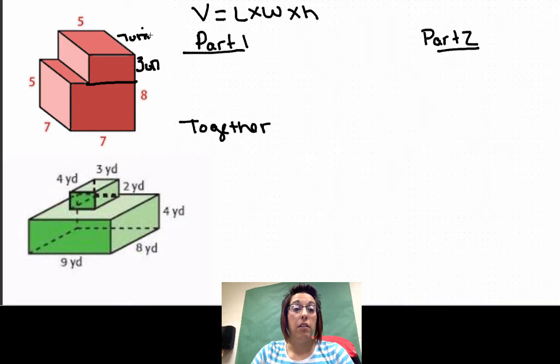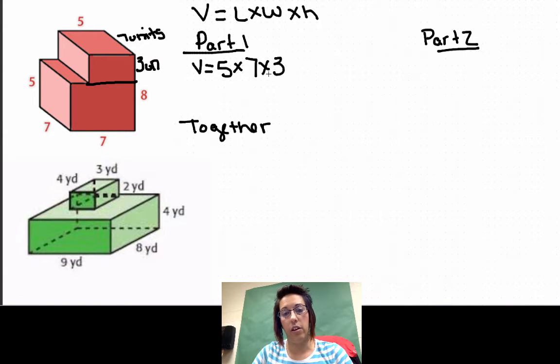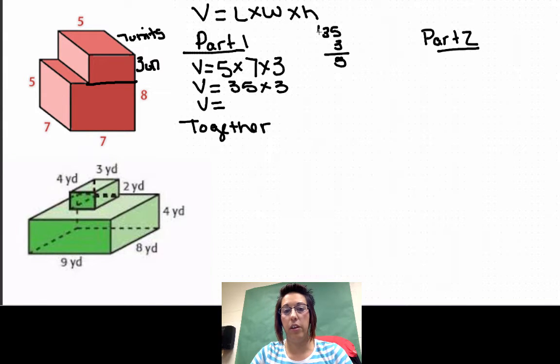That's going to help me calculate this volume. So I'm going to call this top part part one. Volume equals five for my length times seven deep times three wide. Volume equals 35 times three. Volume equals, three times three is nine plus one is ten, 105 units cubed because it's volume.